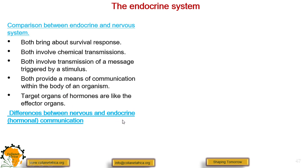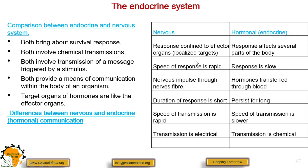What are the differences between the endocrine and the nervous system? We will summarize using a table. In the nervous system, response is only restricted to effector organs — those are localized organs. But in the hormonal system, the response affects several parts of the body. Also, in the nervous system the speed of response is rapid; for example, when you touch a hot pan, you drop it immediately.